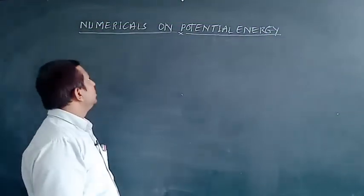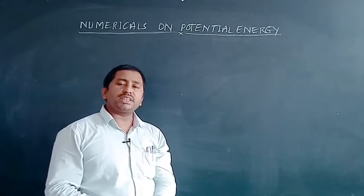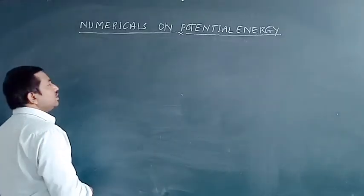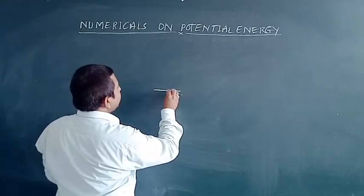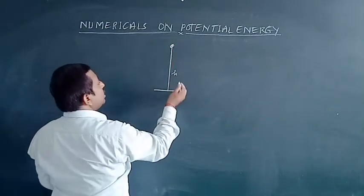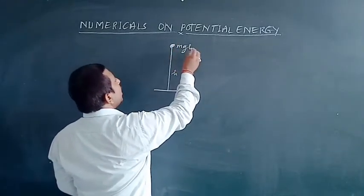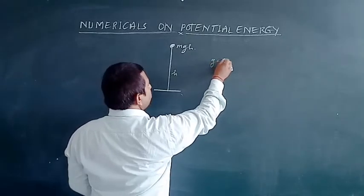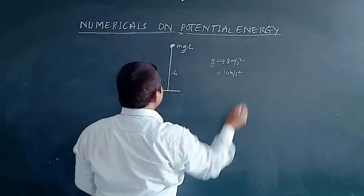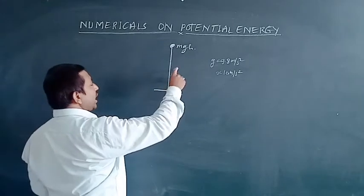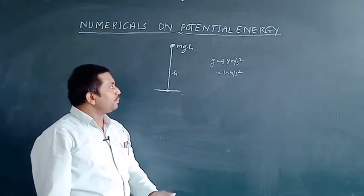Hello students. Let us start our topic: numericals on potential energy. The potential energy stored in any object lifted to a height h from the ground is mgh, where m is the mass of the object, g is the gravitational acceleration with a value of 9.8 m/s² (or sometimes taken as 10 m/s²), and h is the height attained by the particle from the ground.